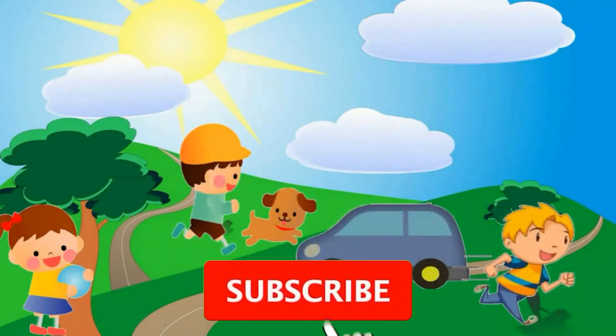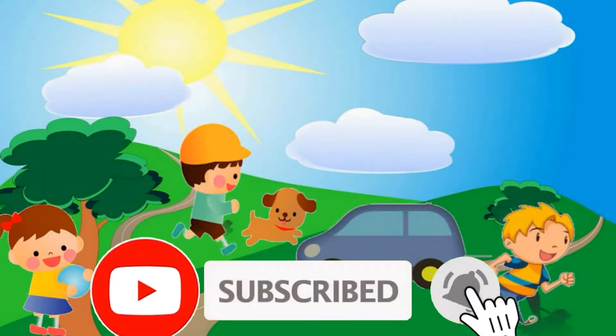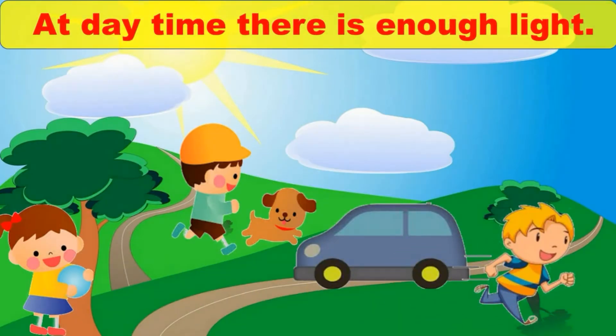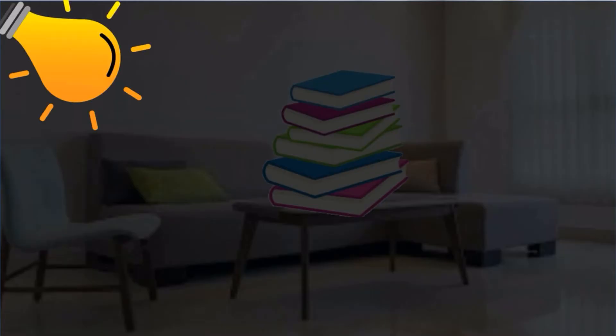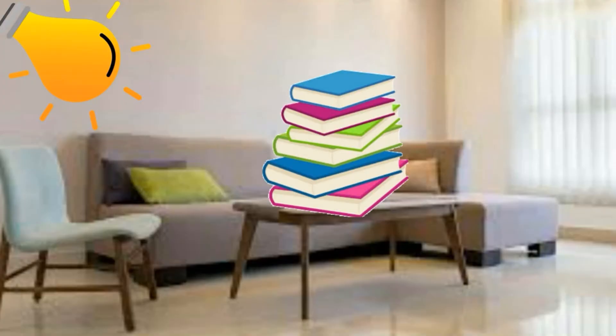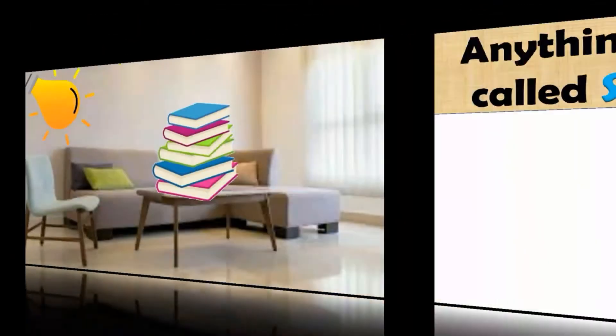We can clearly see things around us in daytime. Can you tell me why? Yes, because at daytime there is enough light. But can you see books kept on a table in a dark room? Are you able to see it clearly? No, but why? It is because of light. Light helps us to see things around us and without light we cannot see anything around us.